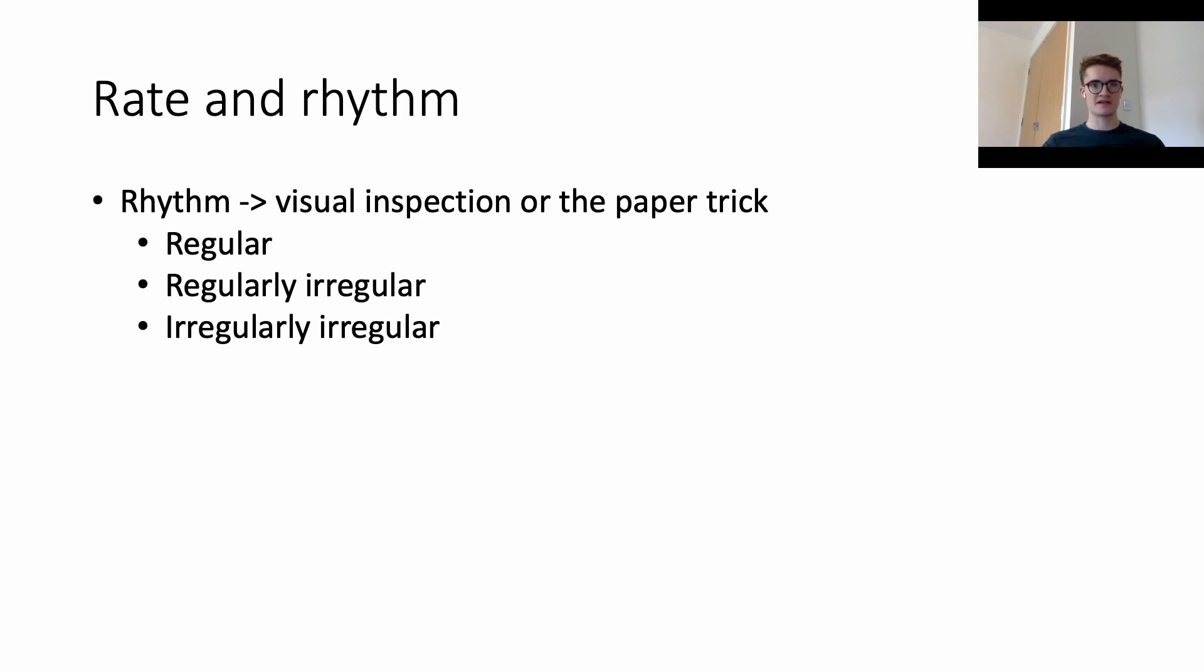After that, we're going to assess the rhythm. What we want to know is, is the rhythm regular or irregular? There are two ways in which we do this. One is by visual inspection, simply looking at the trace and looking, does the distance between all the QRS complexes look regular? Or does it change over time where it might be short here, longer over here? The second way is by using something called the paper trick.